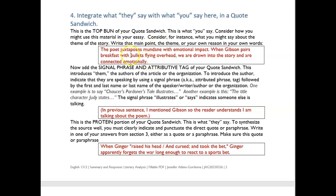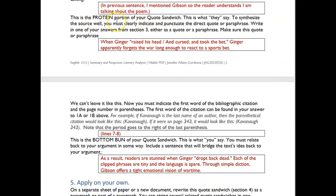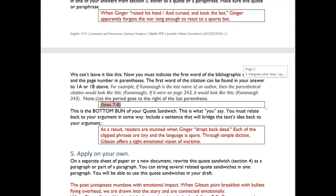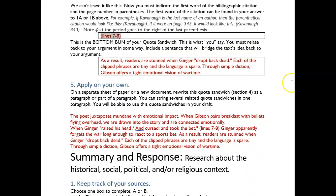So I'm going to say that the poet juxtaposes mundane events like eating breakfast with emotional impact. When Gibson pairs breakfast with bullets flying overhead were drawn into the story and were connected emotionally. This is my idea. This is not what some source told me. So that my top bun is this. Now I want to add a signal phrase and attributive tag. Now, because of the previous sentence, I mentioned Gibson. They already, you as a reader would already understand I'm talking about the poem. So then I'm going to give the protein portion, which is like a quote or a summary. When ginger raised his head and cursed and took the bet, ginger apparently forgets the war long enough to react to a sports bet. And then because it's a piece of poetry, I do lines. As a short fiction, you're going to do pages. It's just going to have the page number, not the actual word page. And then I have a bottom bun, which is getting back to my argument. Usually this would have to be something of my own thinking. If it is something else, then I have to indicate that somebody else is saying that. And then I apply it on my own and I get this paragraph.